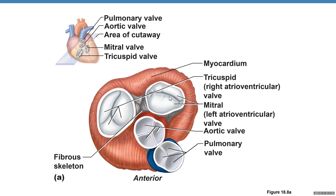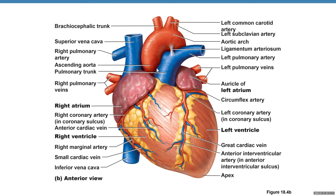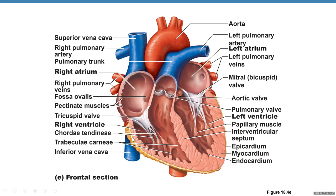So we have four valves total: tricuspid, bicuspid or mitral — the right and left AV valves — and the aortic and pulmonary semilunar valves. You can see all four valves here. When looking at the surface of the heart, you'll see lots of different landmarks. I have another video covering those parts of the heart and associated blood vessels in detail.